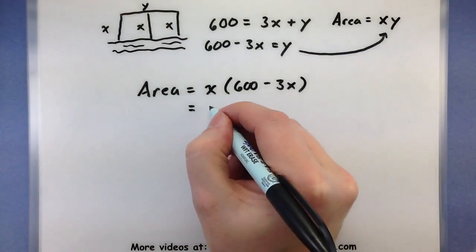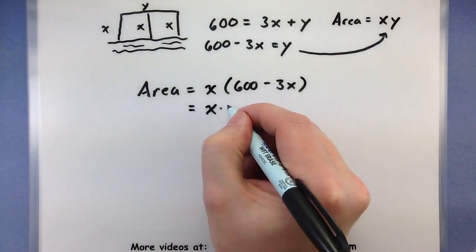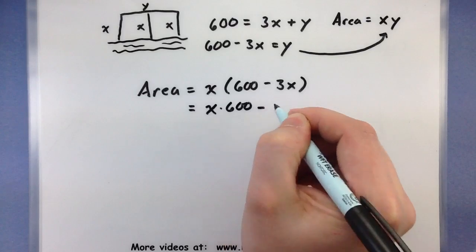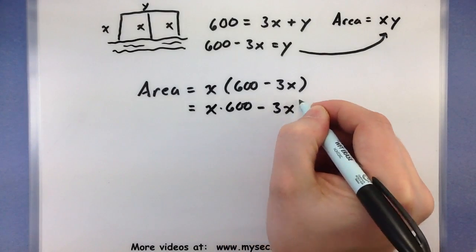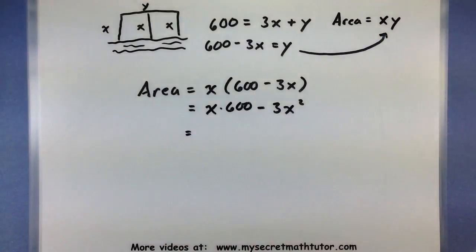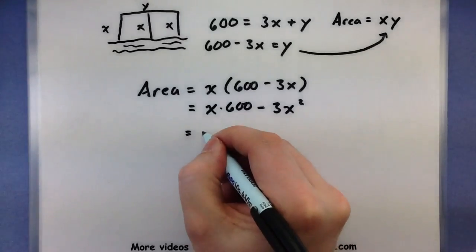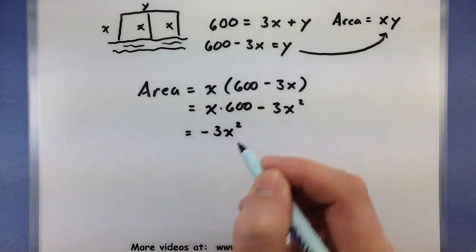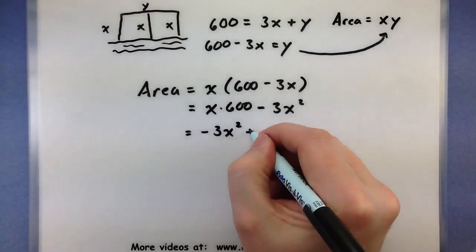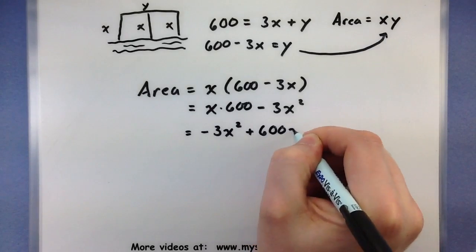Now continuing to multiply through, I get x times 600 minus 3x squared. Let's go ahead and rearrange the terms so that our power is from largest to smallest. So negative 3x squared plus 600x.